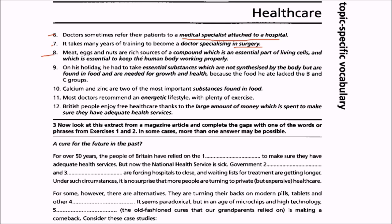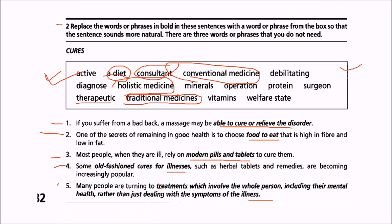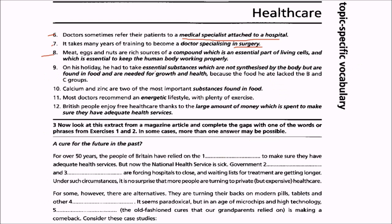Eighth: meat, eggs and nuts are rich sources of a compound which is an essential part of living cells and which is essential to keep the human body working properly. Eighth will match with protein, because these foods are rich in protein.